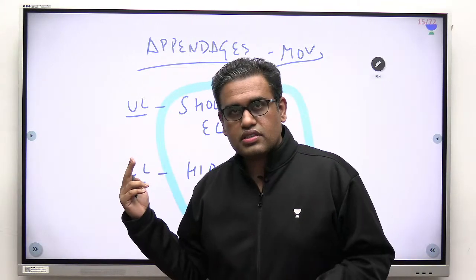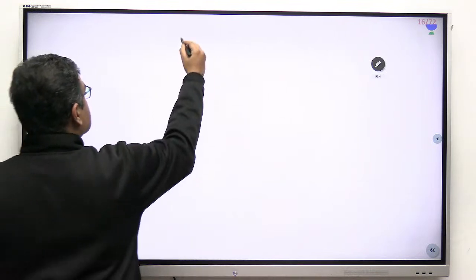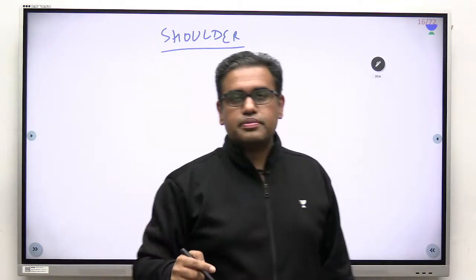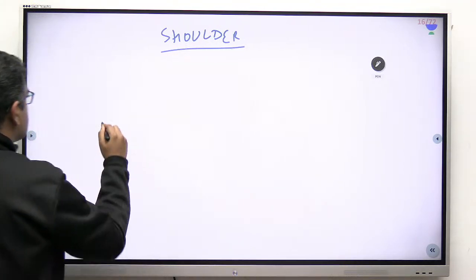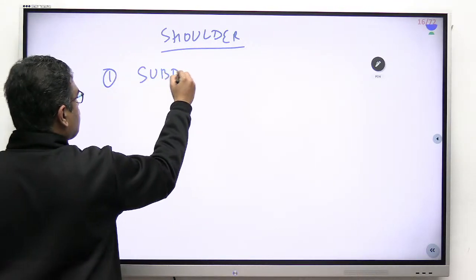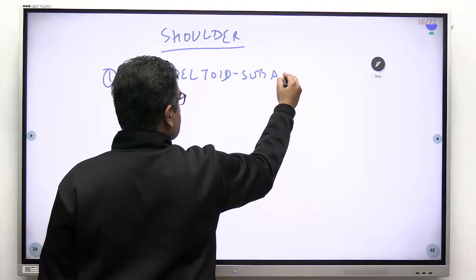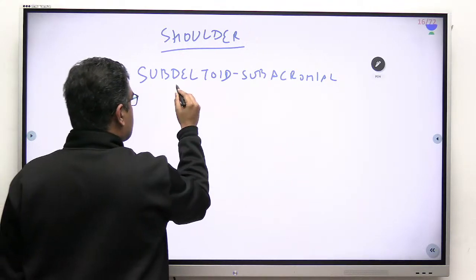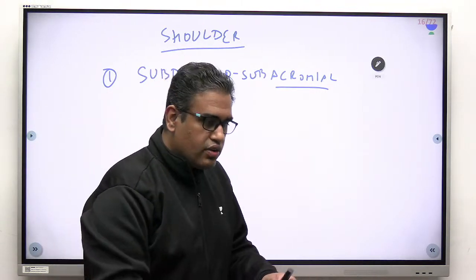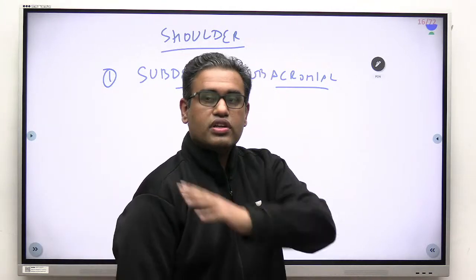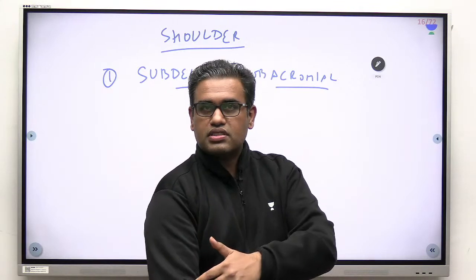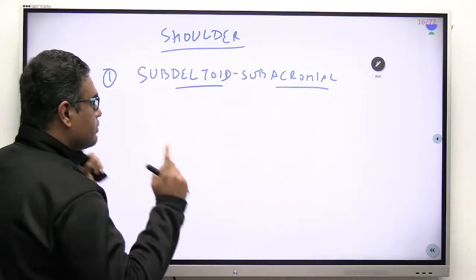Let's go one by one. What are the various bursas around the shoulder joint? One of the largest bursas in the body is the subacromial bursa, also known as the subdeltoid bursa. It is located below the deltoid and below the acromion. The deltoid muscle arises from the clavicle, acromion, and spine of scapula, and inserts into the deltoid tubercle of the humerus. The subacromial/subdeltoid bursa lies deep to the deltoid — it is a very big, very important bursa.